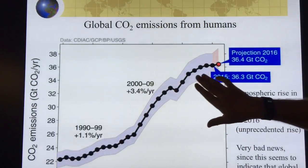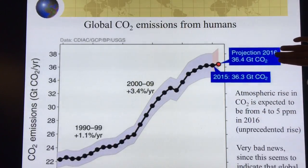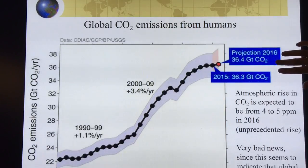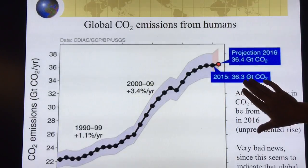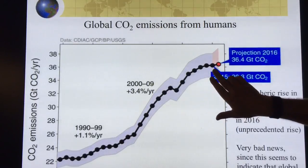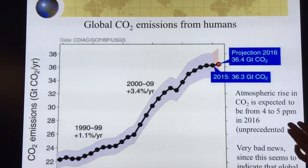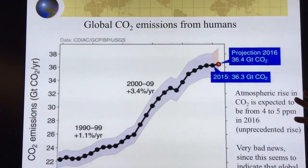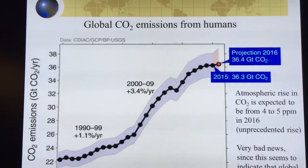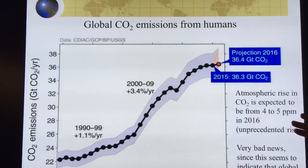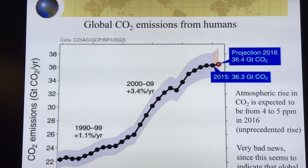Global emissions have stalled for three or four years. The projection for 2016 from humans is 36.4 gigatons of CO2 — almost the same as 2015, with very small change, and similarly in 2014 and 2013. However, why is the CO2 level in the atmosphere hitting record high levels? 3.05 ppm last year, and between four and five ppm — around 4.4 — in 2016: an unprecedented rise. This could be very bad news, since it seems to indicate that global sinks are likely failing, or these numbers are not correct.